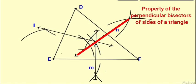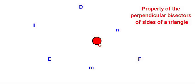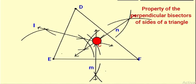Lines L, M, and N are the perpendicular bisectors of sides DE, EF, and FD respectively. All the perpendicular bisectors are intersecting at point C. Hence, C is the point of concurrence.